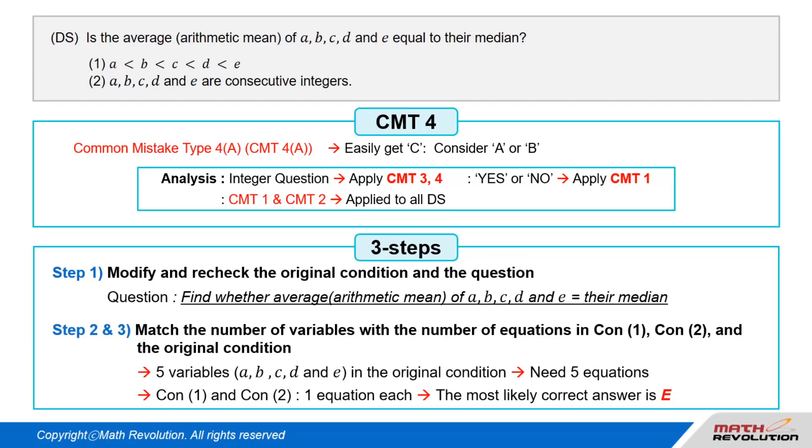Follow the second and third steps. From the original condition, we have five variables: A, B, C, D, and E. To match the number of variables with the number of equations, we need five equations. Since conditions 1 and 2 will provide one equation each, E would most likely be the answer. This is also a typical 50 to 51 level question, so be careful.